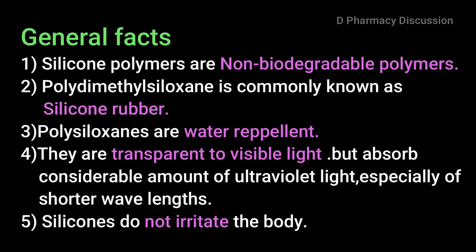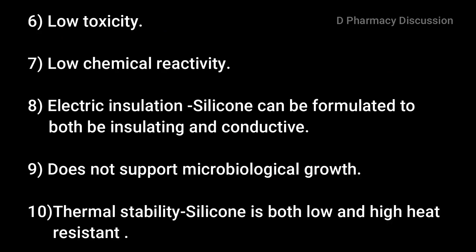Some general facts: silicone polymers are known biodegradable polymers. Polydimethylsiloxane is commonly known as silicone rubber. Polysiloxanes are water repellent and transparent to visible light but absorb a considerable amount of ultraviolet light, especially of shorter wavelengths. Silicones do not irritate the body — they are of low toxicity and low chemical reactivity. Silicone can be formulated to be both insulating and conductive, does not support microbiological growth, and is resistant to both low and high heat.